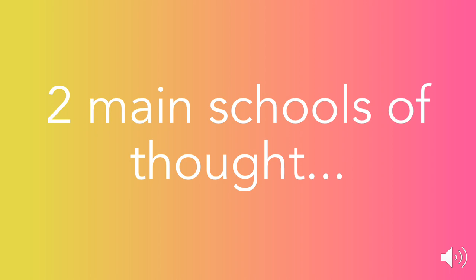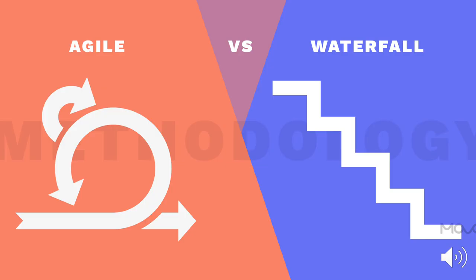With regards to how to get software working and out the door, there are two main schools of thought: Agile and Waterfall. Waterfall is not the main way to do things anymore — it was earlier in modern product development. But for the last decade or more, Agile has really become the gold standard for how to produce software. If you look at the Agile icon, you'll notice arrows moving backwards and forwards, which represents the team's ability to interact with each other regardless of what stage the development process is currently in.